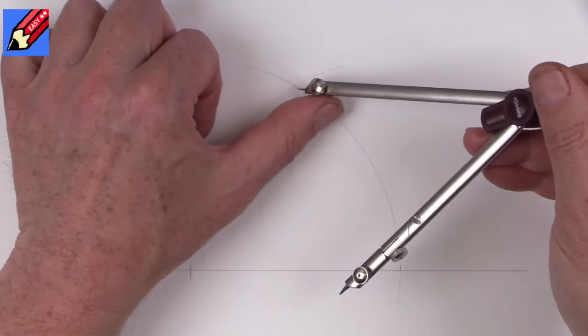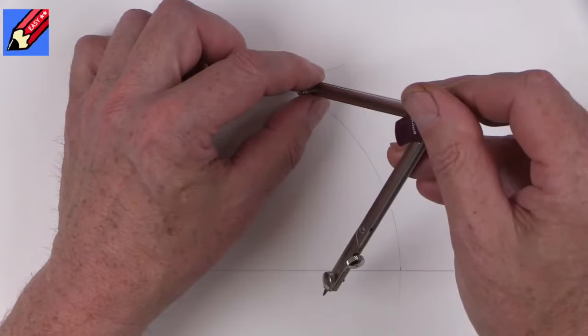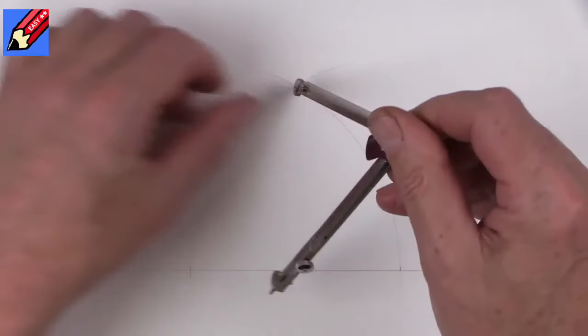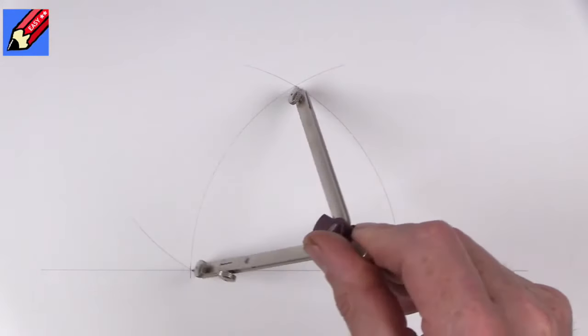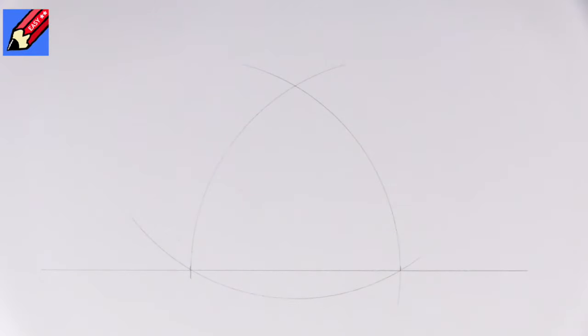So in theory, if we then put the pin in that point where they cross, the intersection, this should go... yes, and yes, it goes right the way through those points too. So any point on this curve is 10 centimeters away from there, which sounds like if everything is equal it's starting to sound like an equilateral triangle.